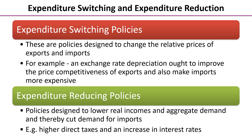Some of our policies can also be split into expenditure switching policies and expenditure reduction policies. Expenditure switching policies are designed to change the relative prices of exports and imports — an example here is an exchange rate depreciation. Expenditure reducing policies are designed to lower real incomes and aggregate demand and therefore cut the demand for imports. Examples here might be higher rates of tax or an increase in interest rates.